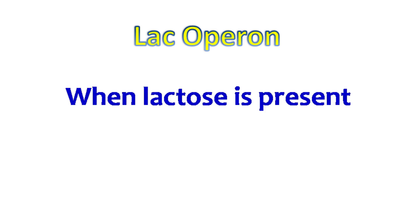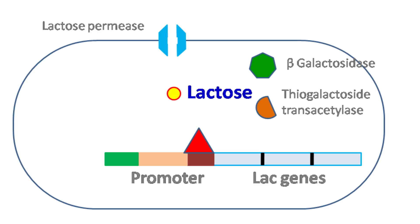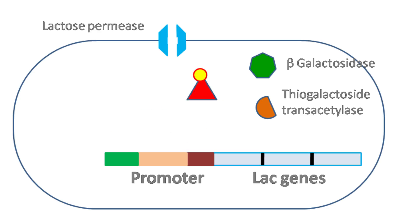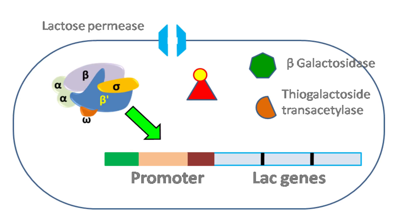When lactose is present, it enters the cell with the help of lactose permease — remember, lactose permease is present because of the basal level transcription of the lac genes. The lactose that enters the cell binds with the repressor and releases it from the operator. As the operator is now free, RNA polymerase can bind the promoter and initiate transcription of the lac genes.